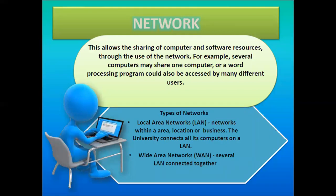Networks allow the sharing of computer and software resources. For example, several computers may share one printer, or a word processing program could be accessed by many users. We have two types of network: LAN and WAN. LAN, or local area network, covers networks within a specific area, location, or business — for example, a university connecting all its computers on a LAN. Most commonly, LAN uses a wired connection since devices are close to each other.